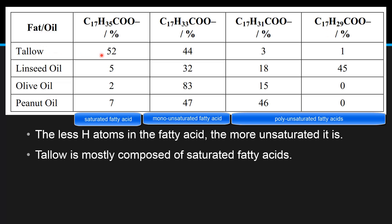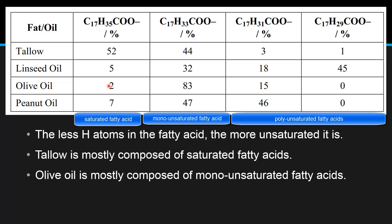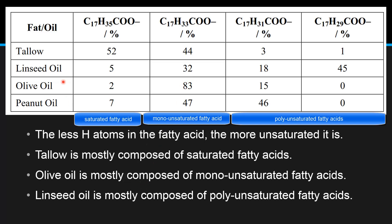Starting with tallow, we can see that 52 percent of it is composed of saturated fatty acids. Olive oil is mainly composed of monounsaturated fatty acids. Linseed oil contains 18 percent of one polyunsaturated fatty acid and 45 percent of another, so linseed oil is mostly composed of polyunsaturated fatty acids. Finally, peanut oil is composed of 47 percent monounsaturated fatty acids and 46 percent polyunsaturated fatty acids.